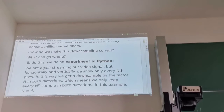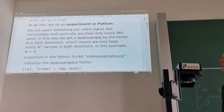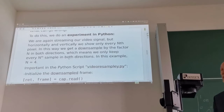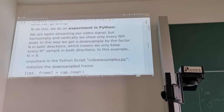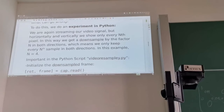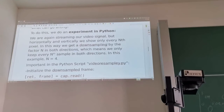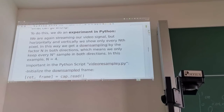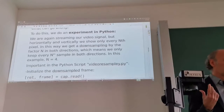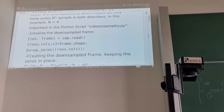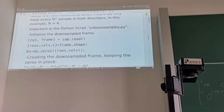To see this, again an experiment in Python. We're using a streaming or video signal, but horizontally and vertically we show only every nth pixel. In this way we get downsampling by a factor of n in both directions, keeping only every nth sample. In the example n is 4 — more than we would do for color sampling — so that it's easier to see the artifacts. I wrote this Python script video_resample.py.